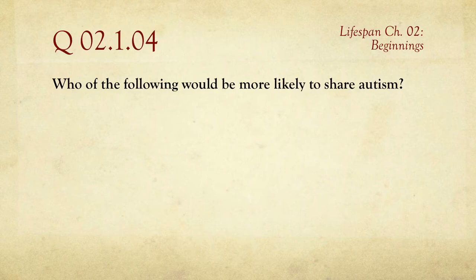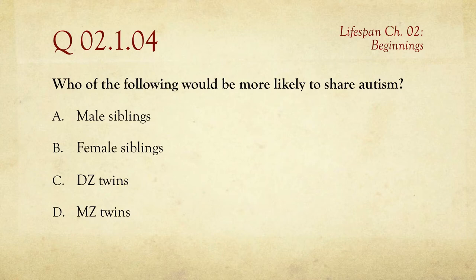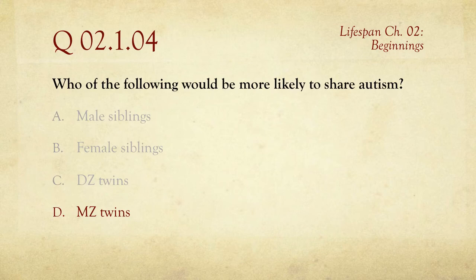Question four: who would be more likely to share autism — male siblings, female siblings, DZ (dizygotic) twins, or MZ (monozygotic) twins? The answer is D, monozygotic twins, because they share all of their genetics — they're genetically identical. If there is a genetic component to autism, and there's good reason to believe there is, they would both share it. The key is knowing that MZ means monozygotic — a single fertilized egg that splits into two embryos.